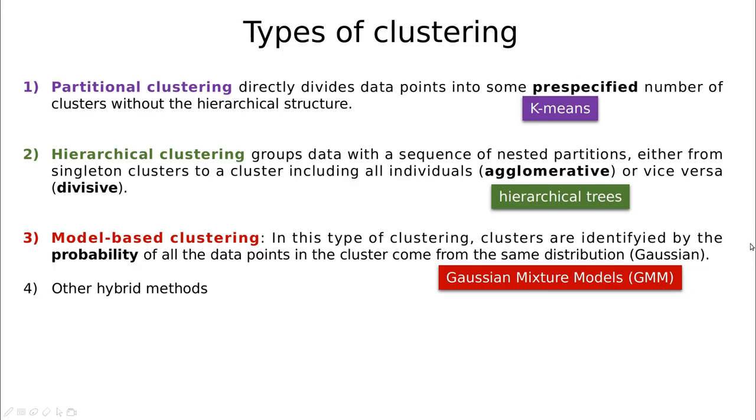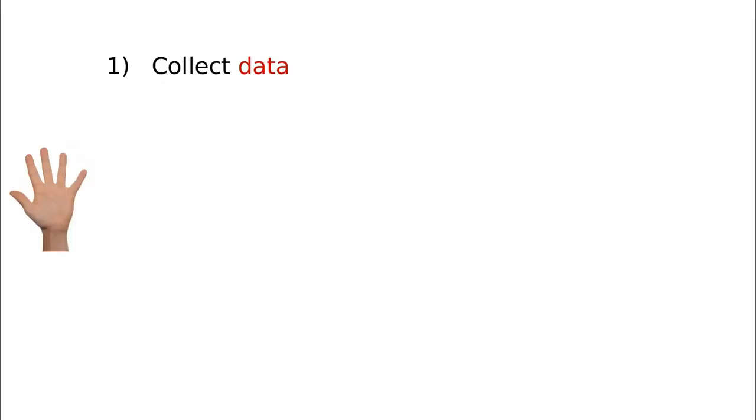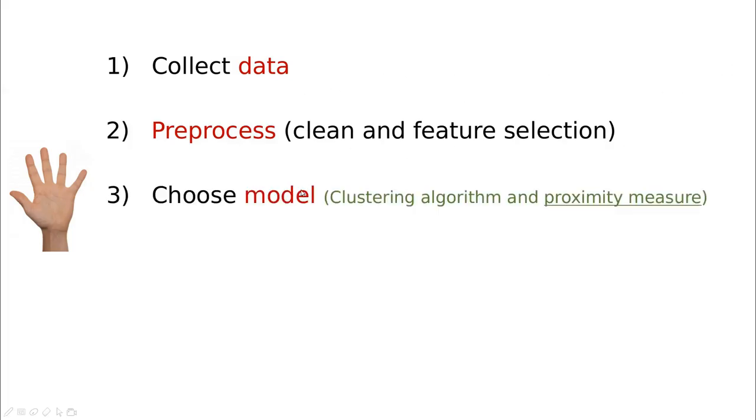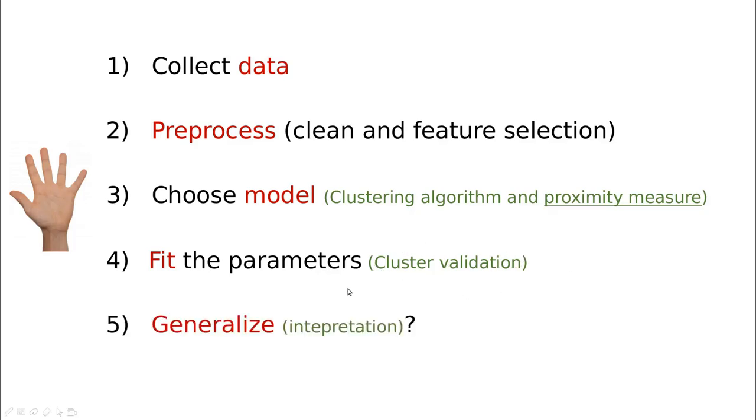Being practical, how are we going to do that? As usual, we're going to collect data, pre-process, clean, and do some feature selections in the same fashion as before. The novelty here is that when we choose the model, we have to decide not only the model but also the proximity measure. We also want to fit the parameters, and we are going to call that cluster validation. And of course the idea of how we can generalize these results or make some interpretation of the data.